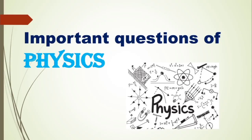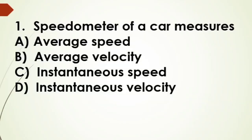Hello everyone, in this video we are discussing important questions of physics. So let's start the first question: speedometer of a car measures - options: A) average speed, B) average velocity, C) instantaneous speed, and D) instantaneous velocity. And the answer is option C, instantaneous speed.